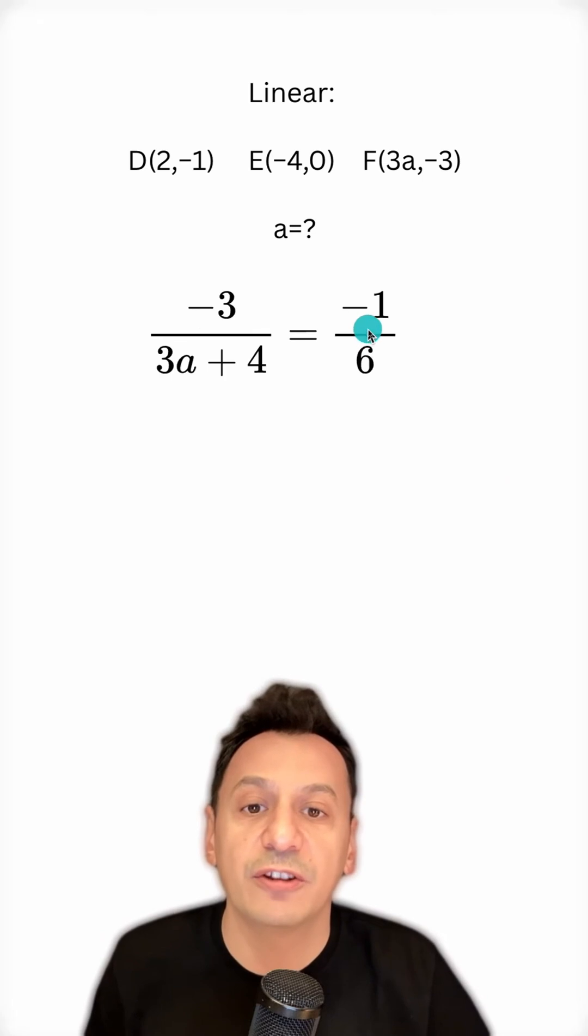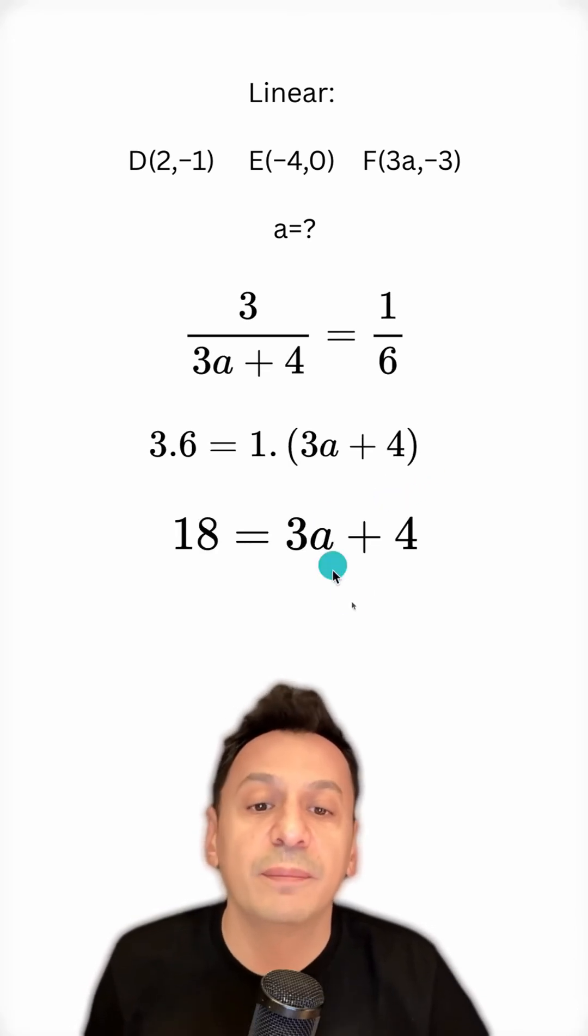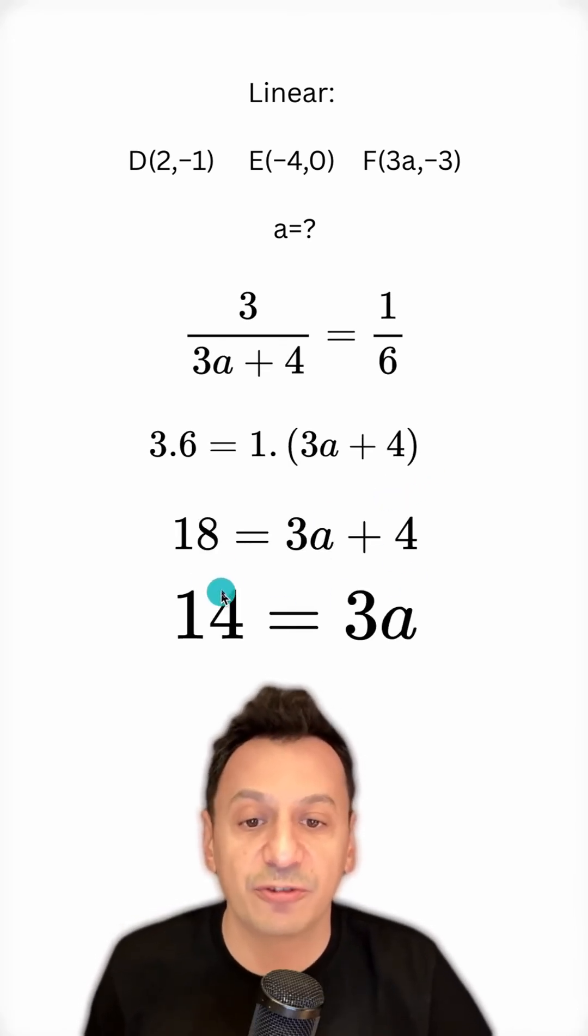The negatives here will cancel each other out. I perform cross multiplication: three times six is eighteen, and here it will be three a plus four. Then I move the four to this side as a subtraction.